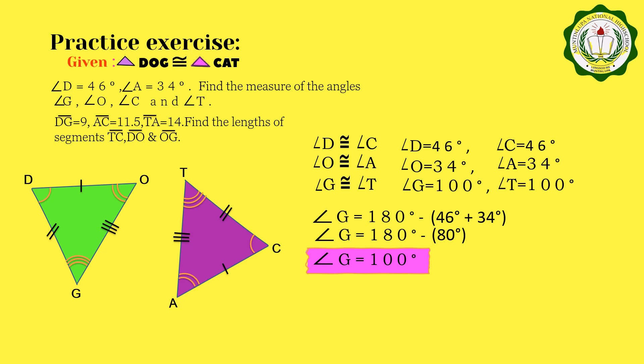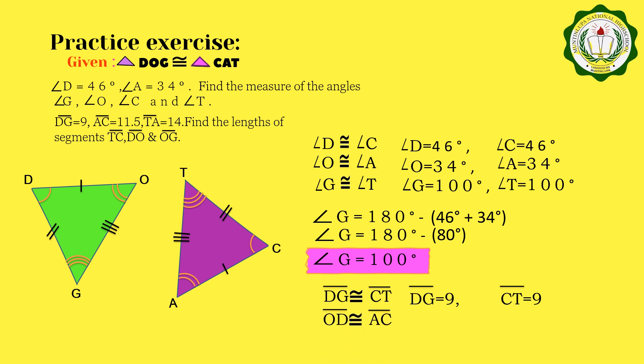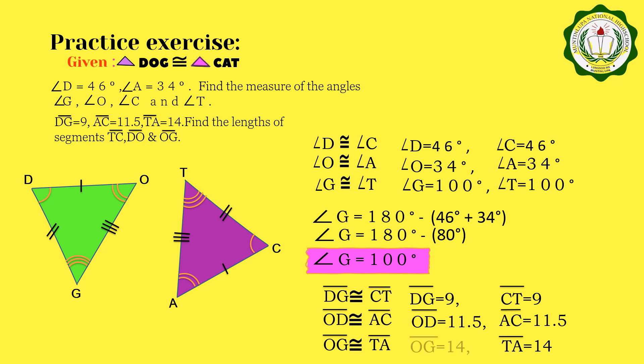Let us now continue for the sides. We have segment DG congruent to segment CT. Since DG is equal to 9, then CT is also 9. Next, we have segment OD congruent to segment AC. Since segment AC is equal to 11.5, then OD is also 11.5. And lastly, we have segment OG congruent to segment TA. Since TA is 14, then segment OG is also 14.